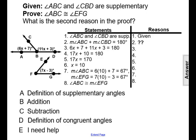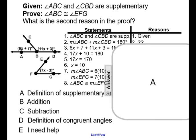And that's what we're doing in the second statement. We're adding the measures of the angles and setting them equal to 180 degrees. So the second reason in the proof is going to be the definition of supplementary angles, making our answer choice A.